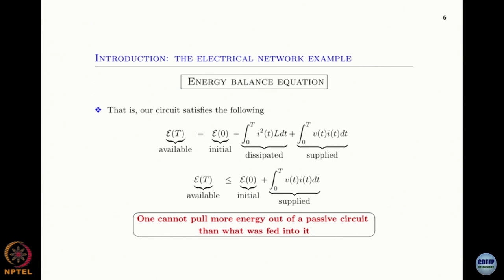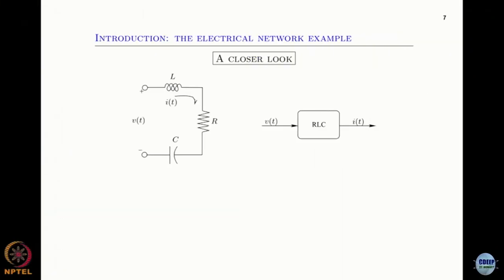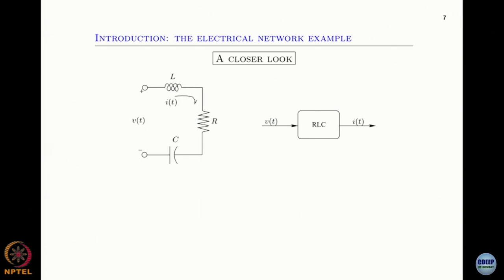In the circuit example, the energy inequality is satisfied due to energy dissipation — one cannot pull out more energy from a passive circuit than what was fed into it. Looking more closely at circuits, as people did decades ago, consider an RLC circuit with resistive, inductive, and capacitive elements. Each of these elements has a key role in the passivity of the circuit.